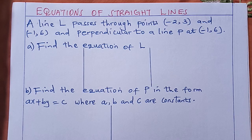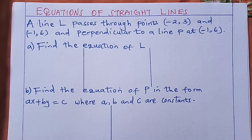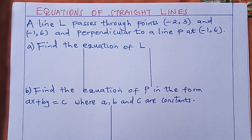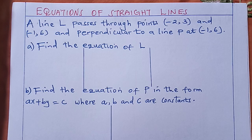A line L passes through points (-2, 3) and (-1, 6). This line is perpendicular to another line P at point (-1, 6). We are supposed to find the equation of line L.